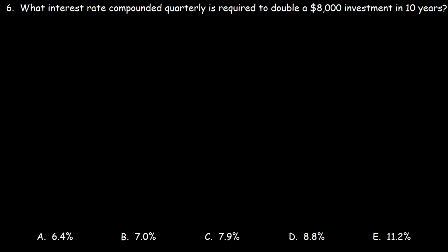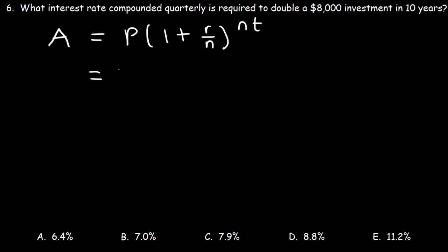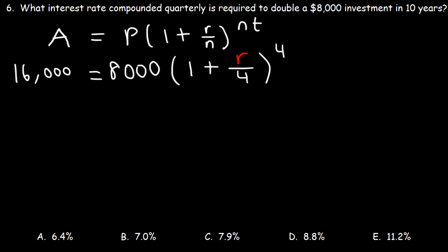Number six: what interest rate compounded quarterly is required to double an $8,000 investment in 10 years? The equation is A equals P times one plus R over N raised to the Nt. The initial investment is 8,000 and we need it to turn into 16,000. Our goal is to solve for R. Since it's compounding quarterly, N is 4, and T is 10.